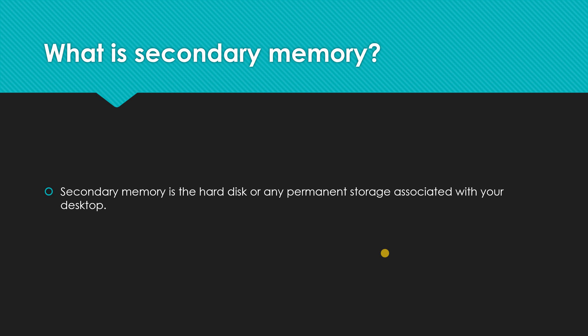What is secondary memory? Secondary memory is the hard disk associated with our laptop and desktop, and secondary memory could be an external device like an external hard disk or a pen drive. The difference between primary and secondary memory is that primary memory is volatile. For example, if you are writing a Word document and suddenly your laptop crashes, that work will not be saved because it was in your RAM. That is volatile memory — when power is lost, the data is erased. To transfer data from RAM to ROM, you have to save the document, so it goes into permanent storage, which is secondary memory.